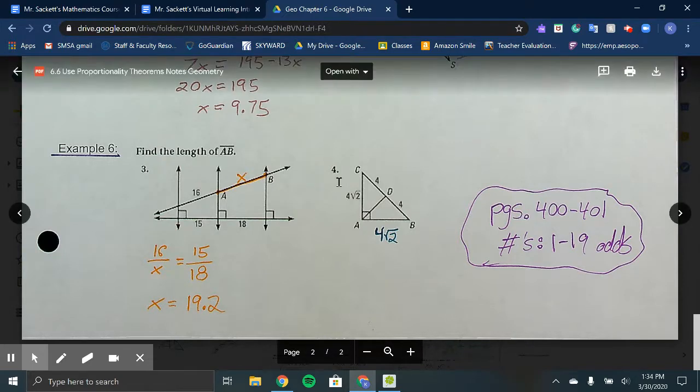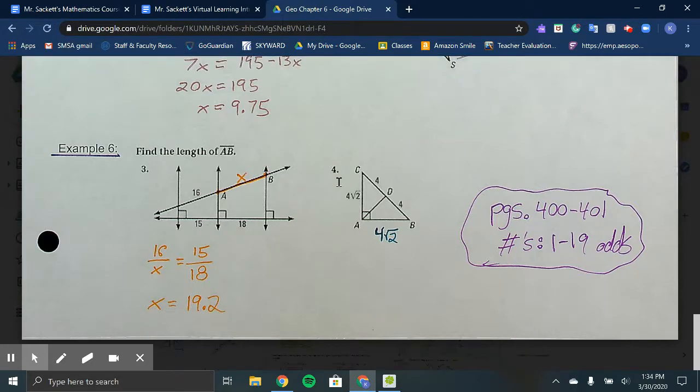In Example 4, looking at this triangle, we could set it up proportionally, but what you should notice is if CD is 4 and DB is 4, we are cutting the angle at A in half. So if CA is 4 square roots of 2, AB is also 4 square roots of 2. You could set up the proportion and find that same measurement as well.